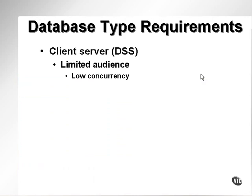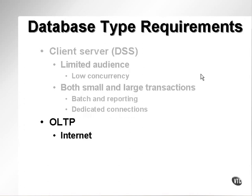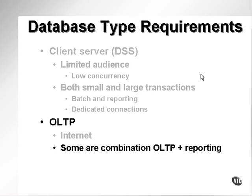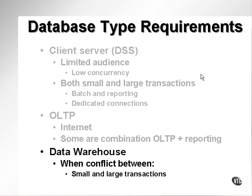The first database type is a client-server database, or quite often called a decision-support system. The term or acronym DSS is sometimes used to cover all types of databases. The second type of database is an OLTP or Internet database, and the third type is a data warehouse.